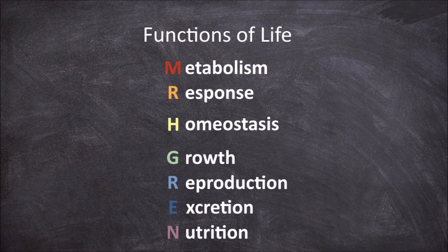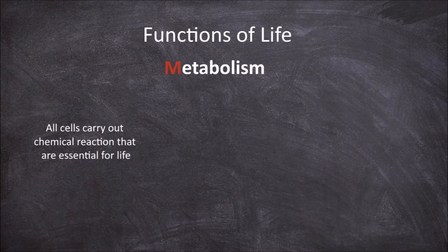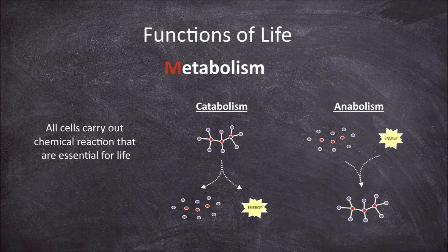One of the essential functional characteristics of life is metabolism. All cells carry out many chemical reactions that are essential for life. Metabolism is the web of all these chemical reactions occurring within cells and organisms. These include catabolic reactions — those that break down compounds such as the breaking down of glucose into energy in cellular respiration — as well as anabolic reactions, those involved in the synthesis of compounds such as the production of proteins and lipids.